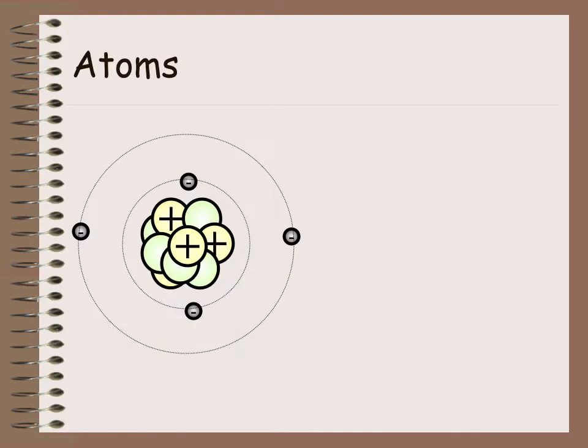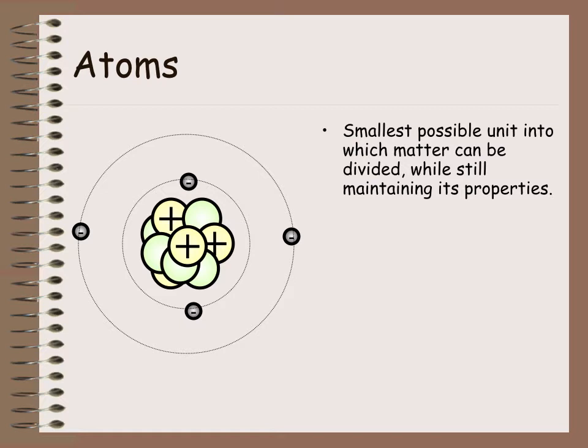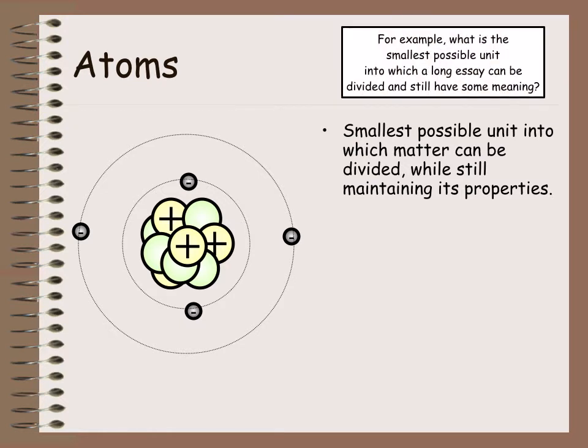So matter is made up of atoms, and atoms are the smallest possible unit into which matter can be divided but still maintain its properties. As an example, if you were writing a long essay for your English class, what's the smallest unit that an essay can be divided into and still have some meaning, and that would be a word. If you divide them into each individual word, each word has a meaning, and that's what an atom is to matter.